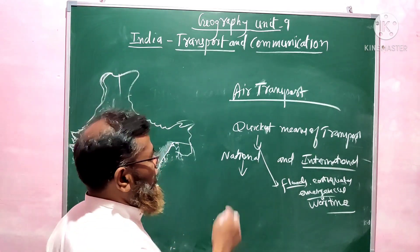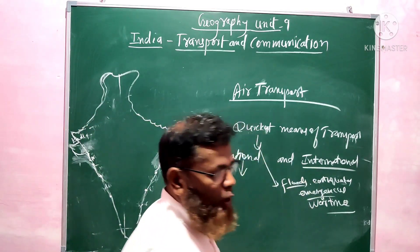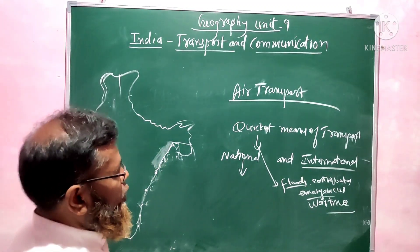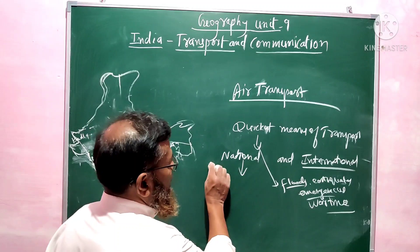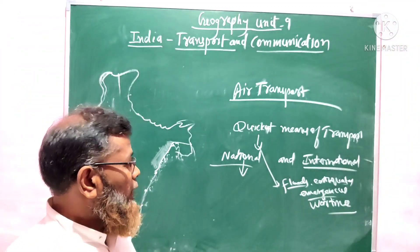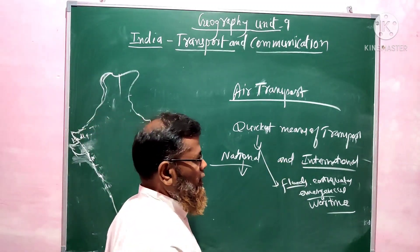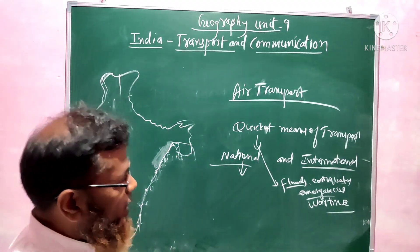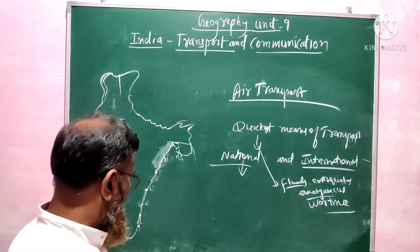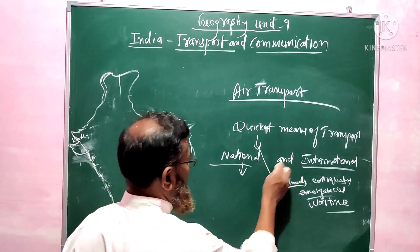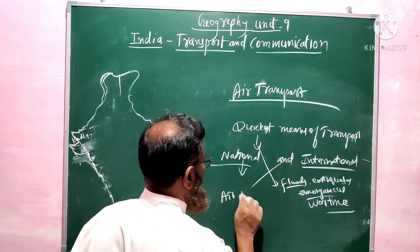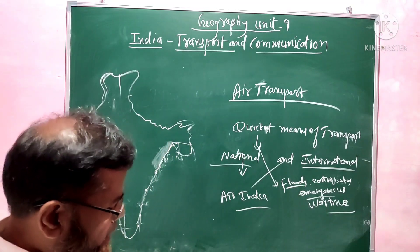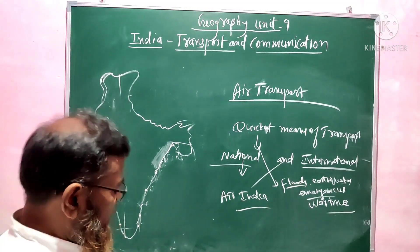National and international are the two important types of air transport. In India, these were earlier started as Indian Airlines and International Airlines, but Air India and those were combined and are now working together as Air India, flying with the Indian flag.